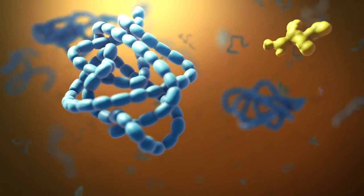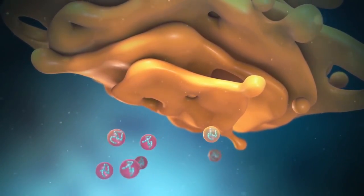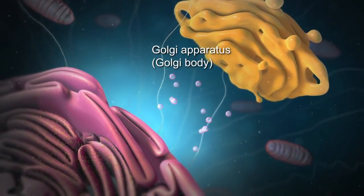Contact with the Golgi apparatus allows Ricin to latch on to a newly formed protein, which is preparing to make its way to the endoplasmic reticulum, the factory of the cell.